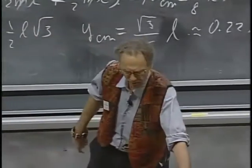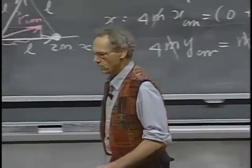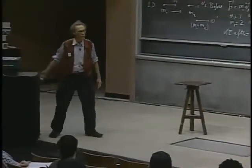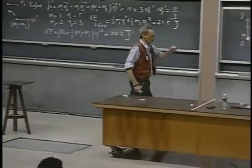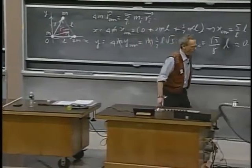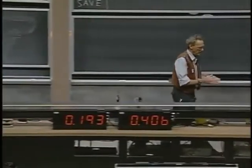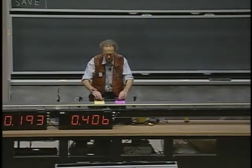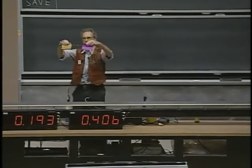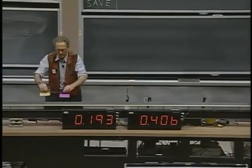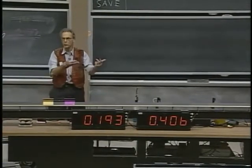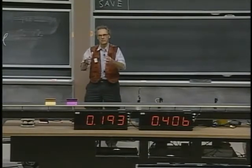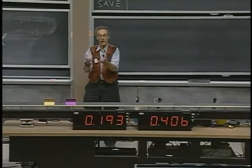I mentioned that the motion of the center of mass is very uniform in the absence of external forces, and I can demonstrate that again with the air track. We have a system here of two cars connected by a spring. I will turn on the air shortly because the air makes a lot of noise. These are two cars connected by a spring, and I will give them a certain motion.